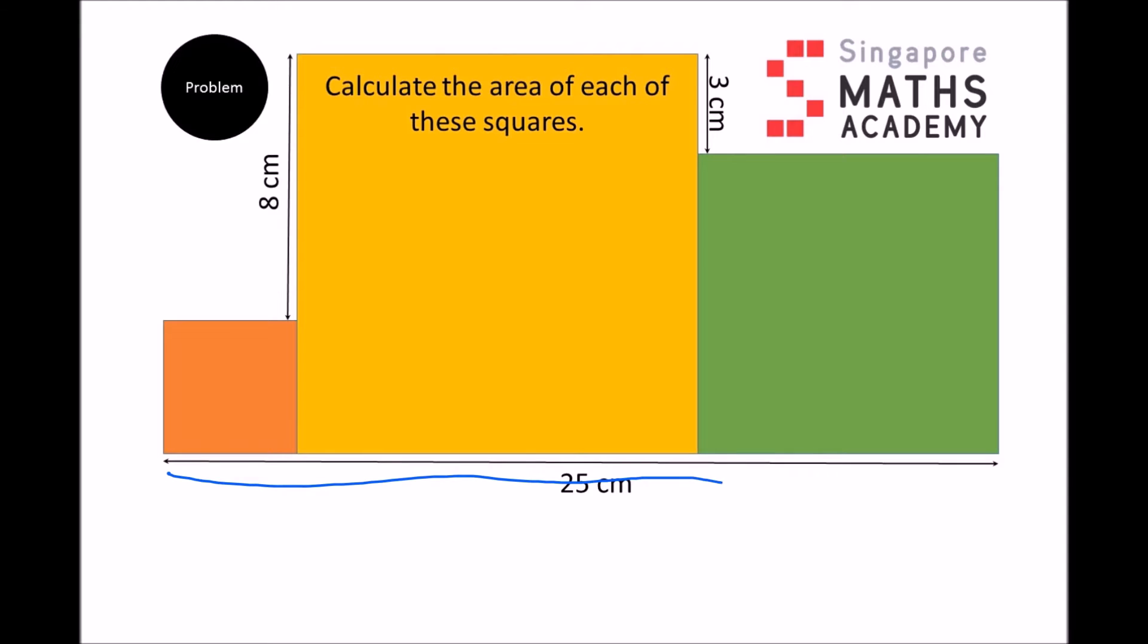So here is the first step. Looking at this section here, this is a section which shows 25cm. And it's a sum of three lengths. A length here, which is a small square length, a medium square length, and a large square length. So those three lengths add up to 25cm.